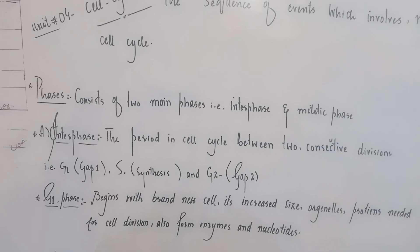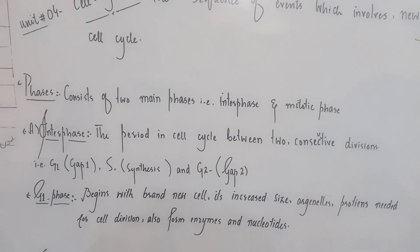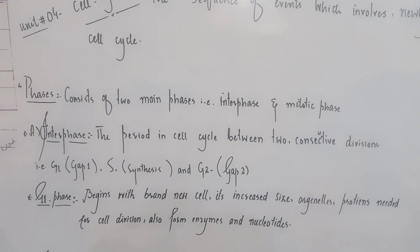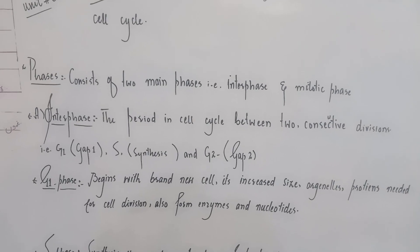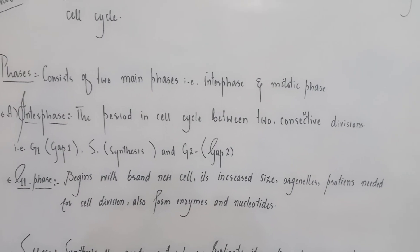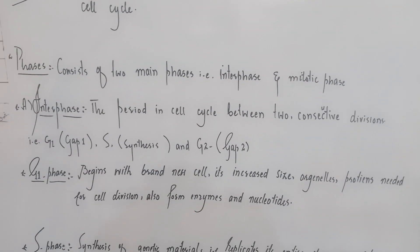It consists of two main phases: interphase and mitotic phase. Interphase is the period in the cell cycle between two consecutive divisions.